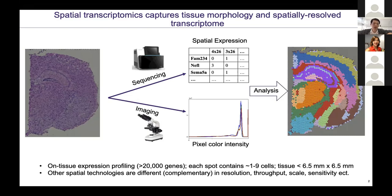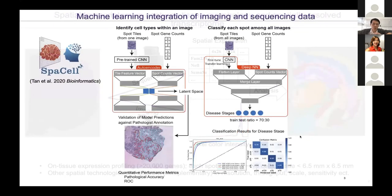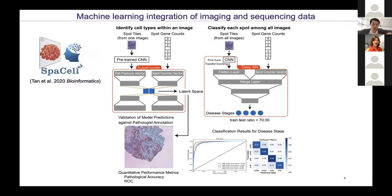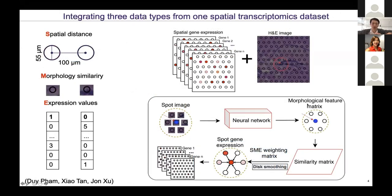The challenge is how we can integrate both sequencing data and imaging data together to make meaningful biological discoveries — this is the first part of my talk. In our previous work we showed the use of machine learning to integrate imaging and sequencing data with potential applications in digital pathology. Today's talk focuses on a new method to discover new biology using three types of information together in one model: spatial information, morphological information, and gene expression information.